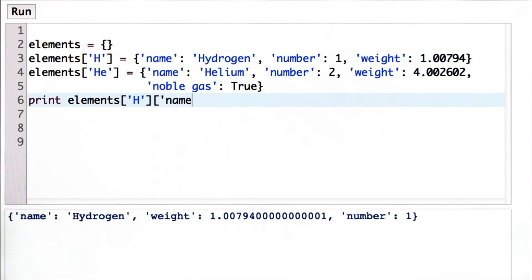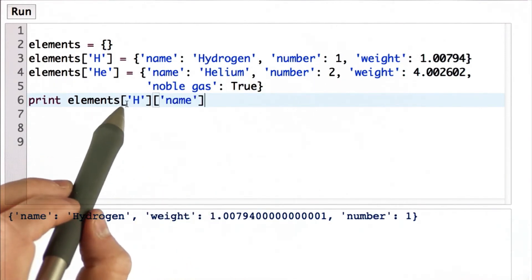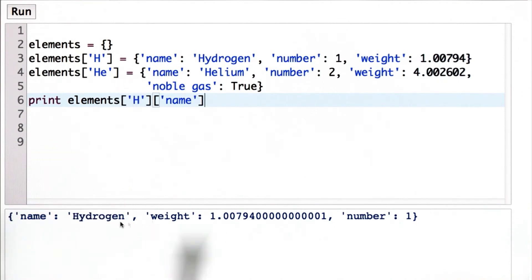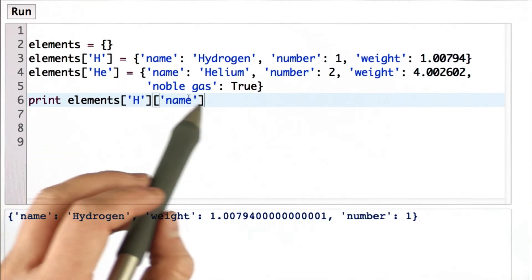But we can do another lookup. So now, we're looking up element h. That gets us the dictionary here. And then we're looking up in that dictionary the value name,